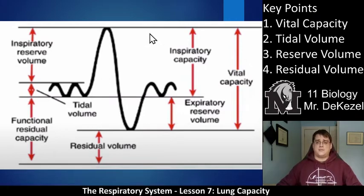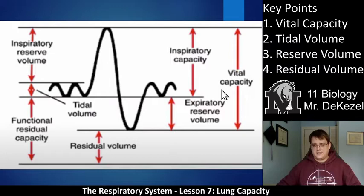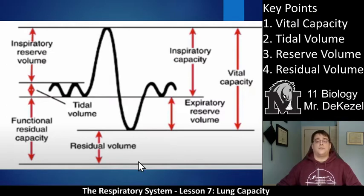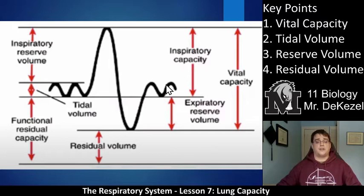As you can see, some of the key points on the right are the words here — pretty much all of them are on here. I think vital capacity is right here. We have tidal volume right here, and we have reserve volume — that's talking about expiratory reserve and inspiratory reserve. And then we have the residual volume. So pretty much all these terms are within here, and we're going to figure out what this graph means.